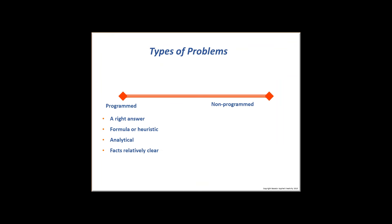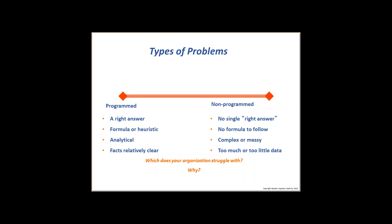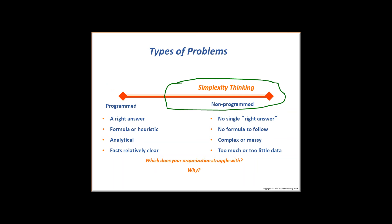Two kinds of problems. There are programmed problems: we know the problem, we've seen it before, we've got a way to do it, and the facts are pretty clear. The other side is totally different: we've never seen it before, no single right answer, it's messy, and there's too much or too little data. Many organizations struggle with both, but certainly the messy one needs help — and this is where simplexity thinking comes in.